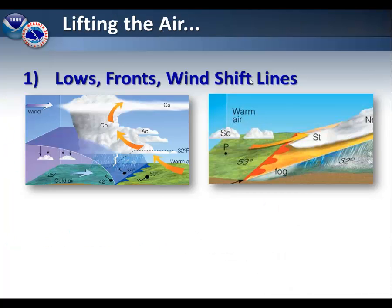First off, we need to lift the air in order to create a thunderstorm. A common way to lift the air involves fronts, low pressure systems, and wind shift lines. In this example on the left side, the air is flowing upward as it reaches the cold front and creating thunderstorms.